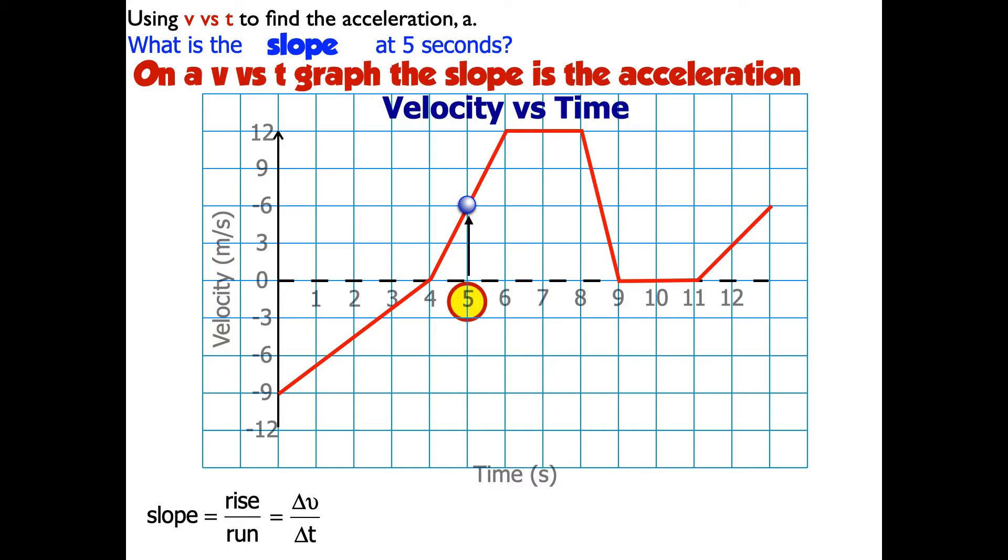So I'll pick my two points on my line somewhere around the 5 seconds. I'll choose 4 seconds and then I'm going to choose 6 seconds. Now I know the change in velocity is always final minus initial, so I need this difference on the vertical axis. And that's going to be the final velocity minus the initial velocity. So that's 12 meters per second minus 0, which is 12 meters per second.